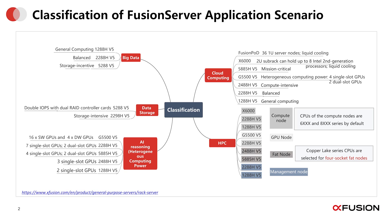We all know AI needs high resources of computing, so we need both CPU and GPU computing. For AI, the G5500V5 could support rich resources in terms of GPU card numbers. Also, our rack servers 2288HV5, 2488HV5, and 5885HV5 can also support GPU on different levels of demand.